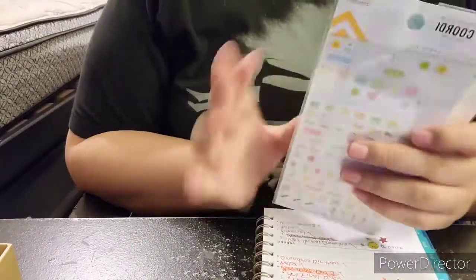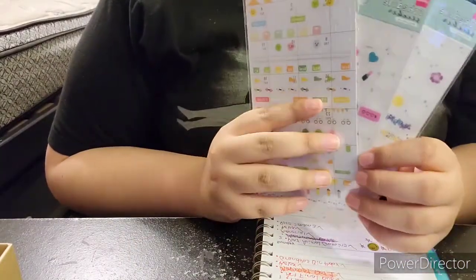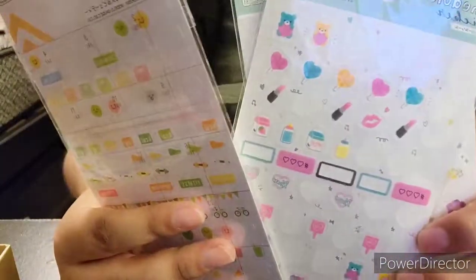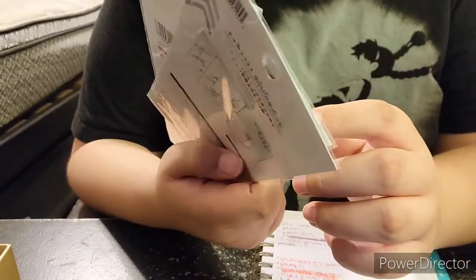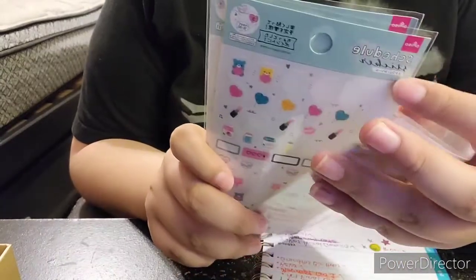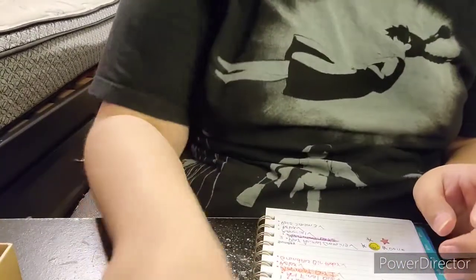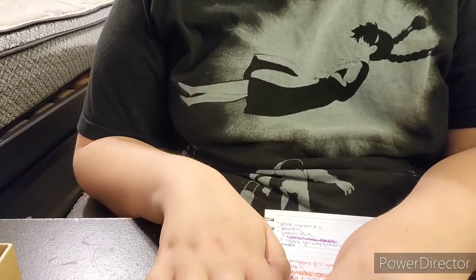Now it's time to pick out all the stickers that I want to put on my little planner. I'm just picking them out. And then I have these that go on the dates. These are like schedule stickers. I want to stick this tab on.